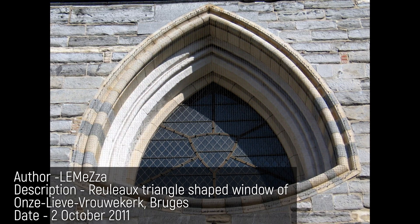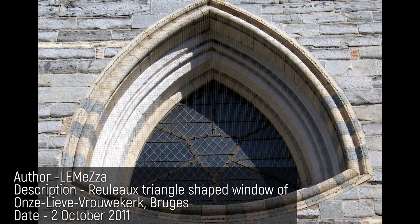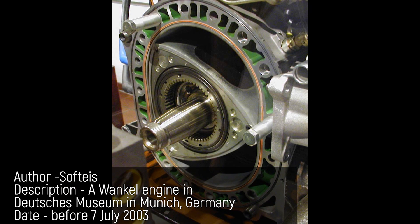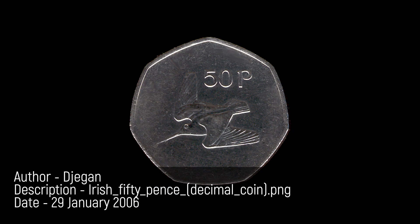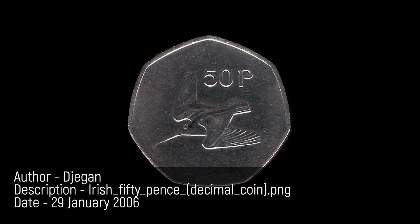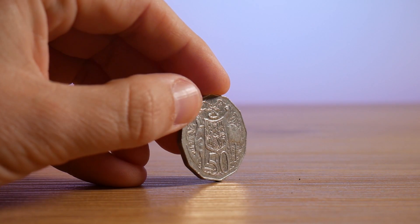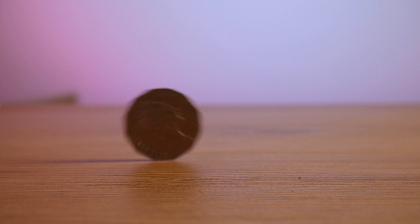Reuleaux Triangles can be found in many applications, from architecture to rotary engines, and even coins like this Reuleaux Heptagon Irish 50 cent piece. Designers of the Australian 50 cent piece clearly didn't get the memo.